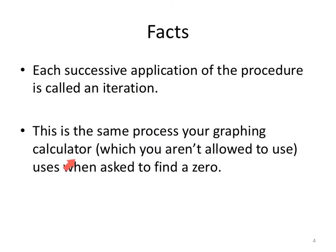An iteration is just successive applications. Keep doing it. It's the same process your graphing calculator uses, which of course here at UTEP we don't allow graphing calculators in Calc 1, hint hint my online students, when it has to find a zero. It uses Newton's method. It just does it a lot quicker than you. But trust me, you can do it the same as your calculator does.